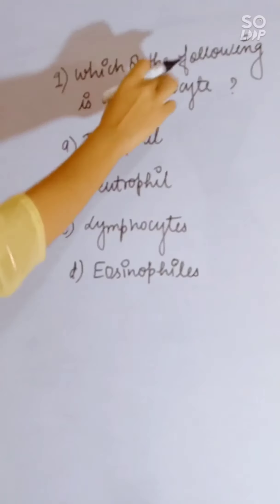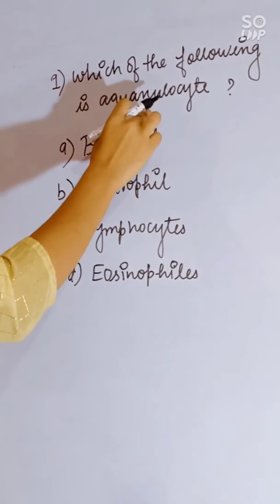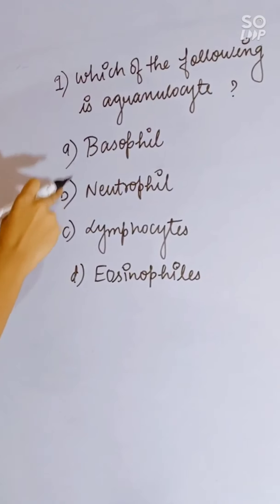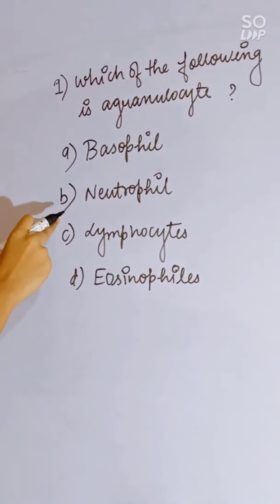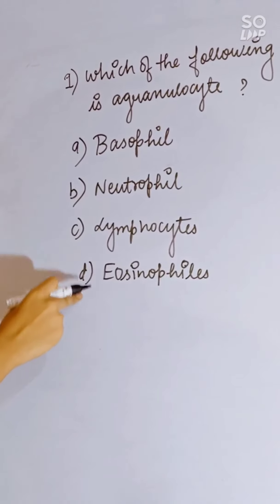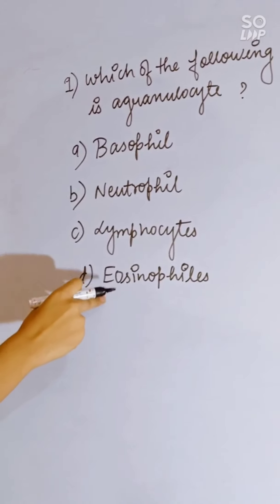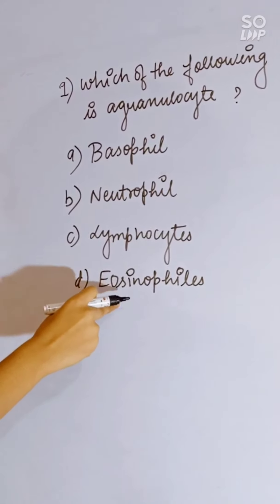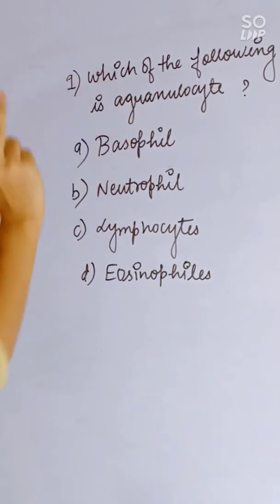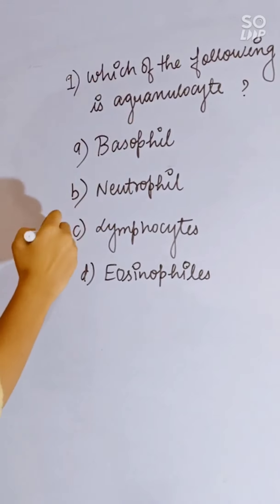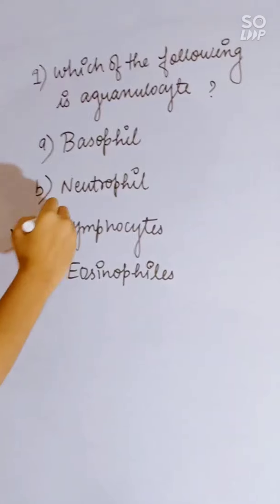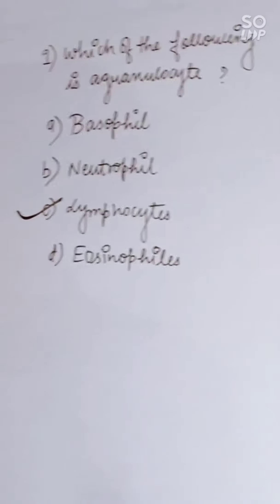Which of the following is an agranulocyte? Options: basophil, neutrophil, lymphocyte, and eosinophil. Eosinophil, neutrophil, and basophil are granulocytes, and lymphocyte is an agranulocyte. Correct answer is lymphocyte.